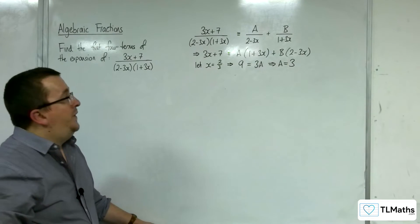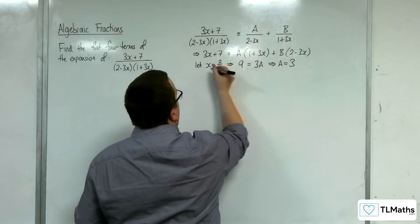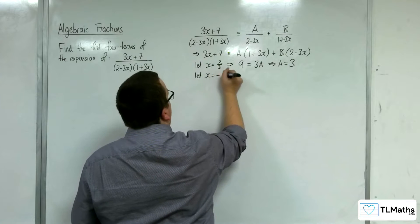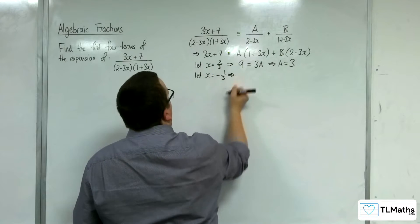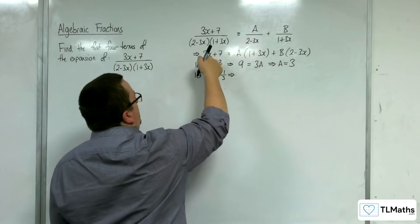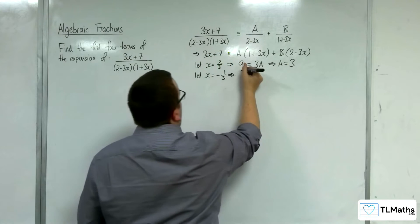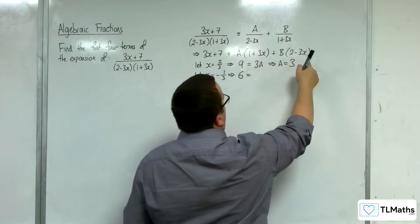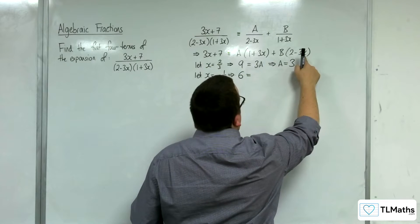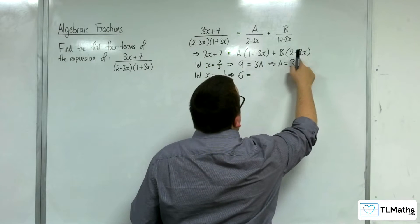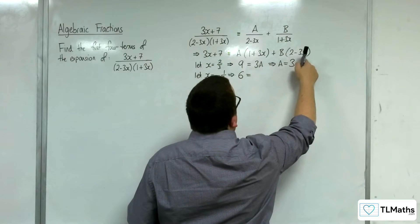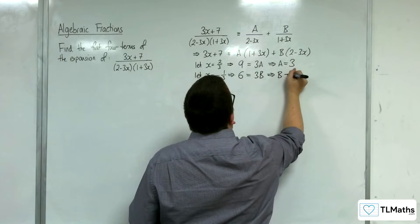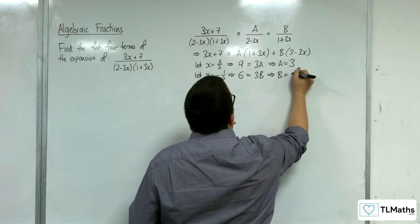To knock out the other bracket, x would have to be −1/3. If x = −1/3, we get −1 + 7 = 6. That bracket is knocked out. Now 3 × (−1/3) = 1, so 2 + 1 = 3, giving 6 = 3B, so B = 2.